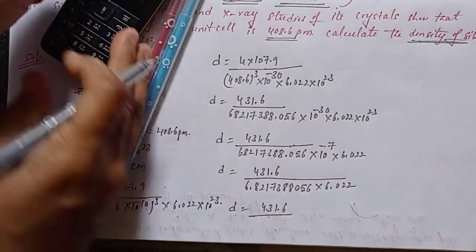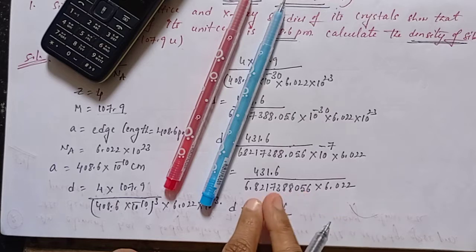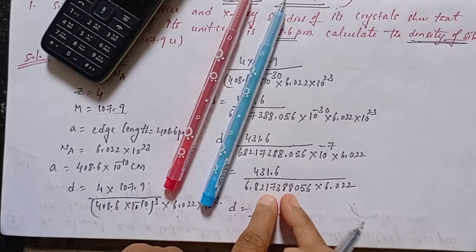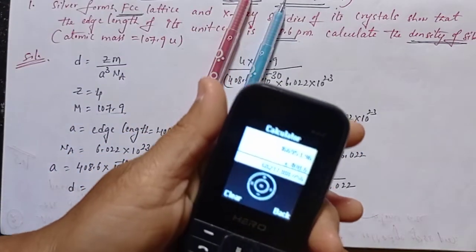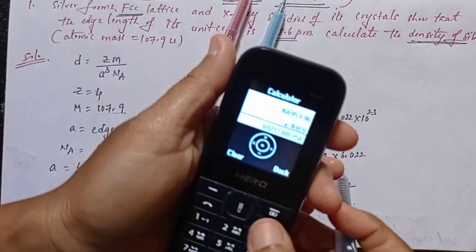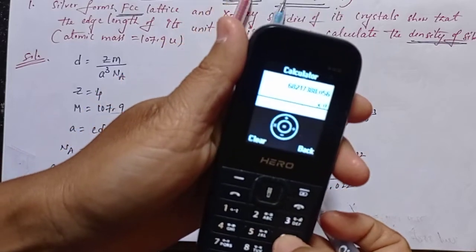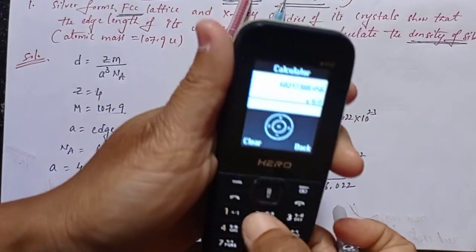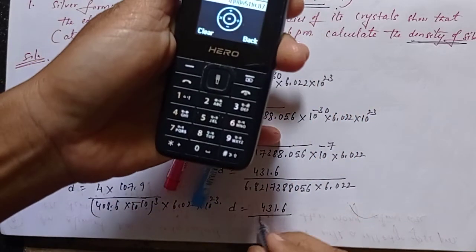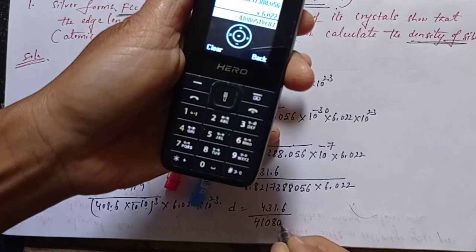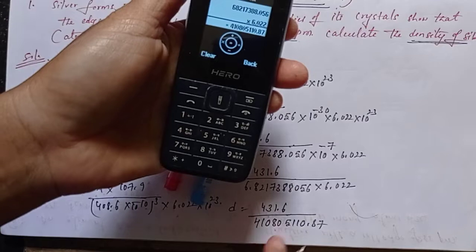Now I multiply 6.8217388056 × 6.022 to get the full denominator value: 6.8217388056 × 6.022 = 41.0805108.7, approximately 41.08.